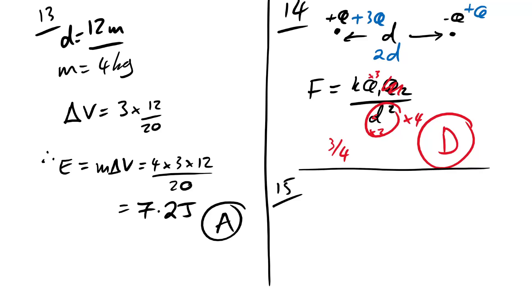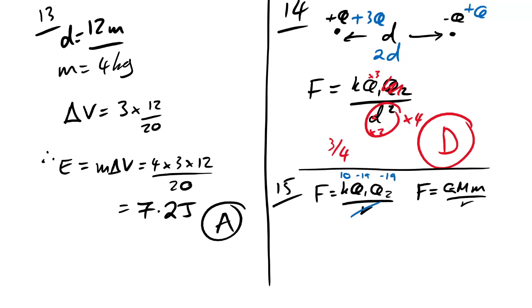Question 15: electrostatic force between two protons is X times greater than gravitational force. Using order-of-magnitude estimates: F_E ∝ k × e² ≈ 10¹⁰ × (10⁻¹⁹)² → order 10⁻²⁸. F_G ∝ G × mₚ² ≈ 10⁻¹¹ × (10⁻²⁷)² → order 10⁻⁶⁵. Ratio ≈ 10³⁶. Answer is C.